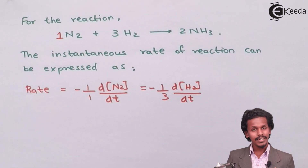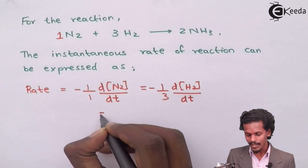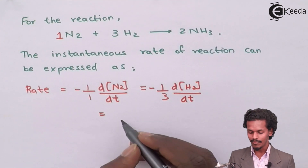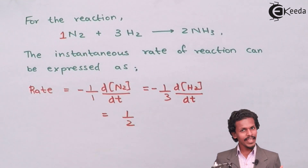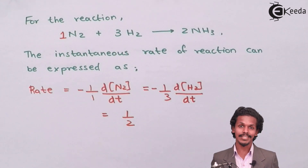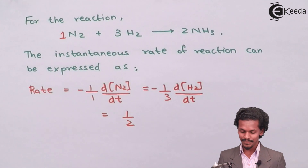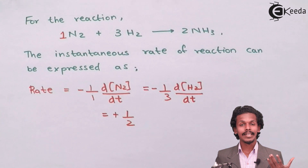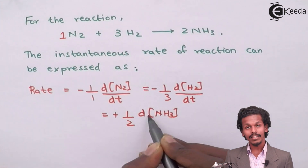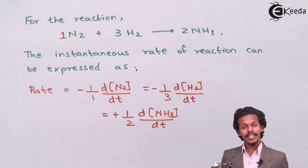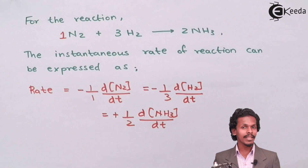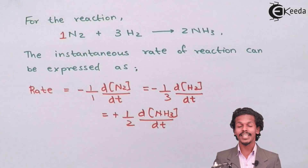For the product NH₃, with stoichiometry 2, written in reciprocal form as 1/2. Since the product's concentration increases with time, we write a positive sign. So: rate = +(1/2) × d[NH₃]/dt. This is how we determine the instantaneous rate of reaction, equating every reactant and product along with their stoichiometric values.